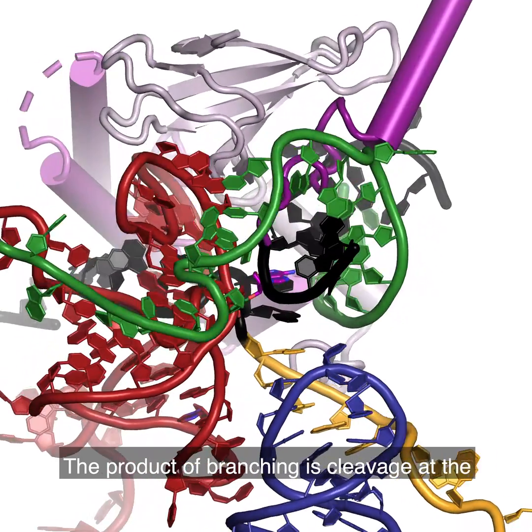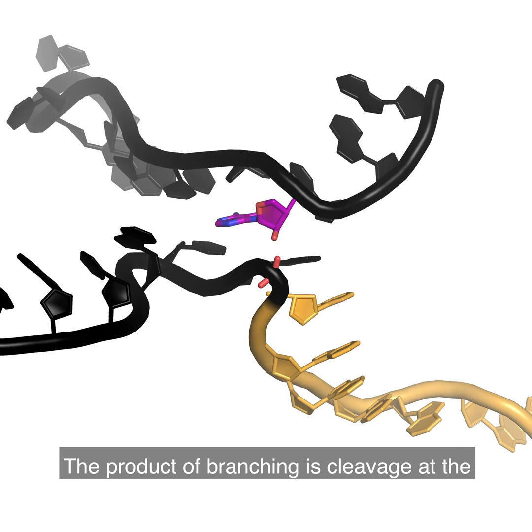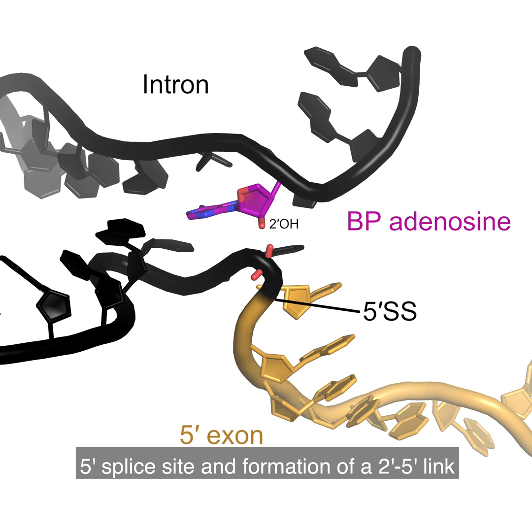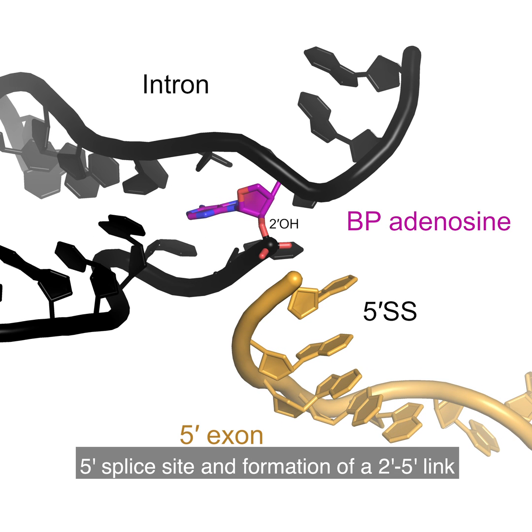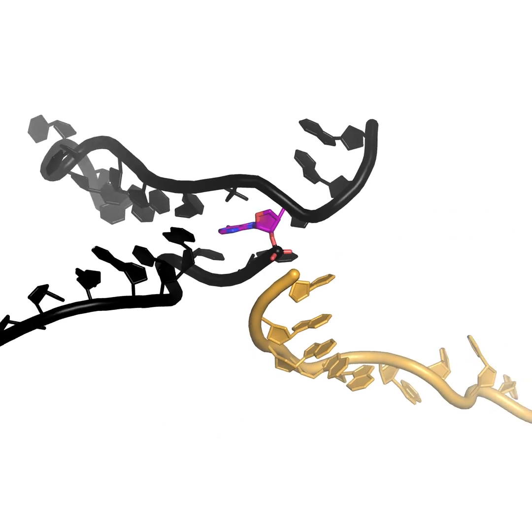The product of branching is cleavage at the 5' splice site and formation of a 2'-5' link between the 5' splice site and branch point.